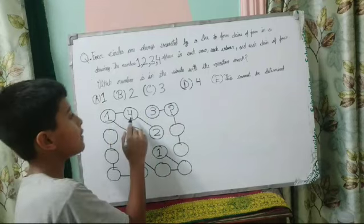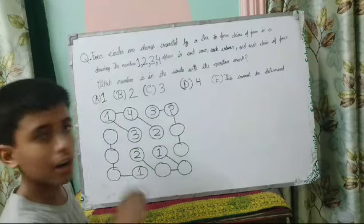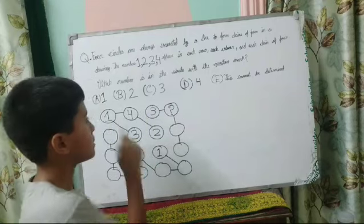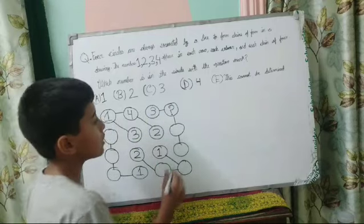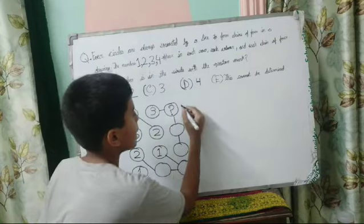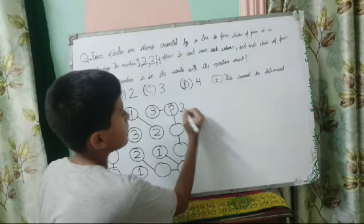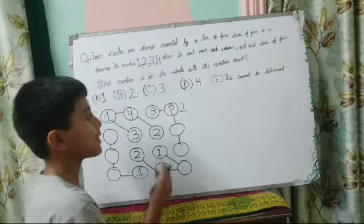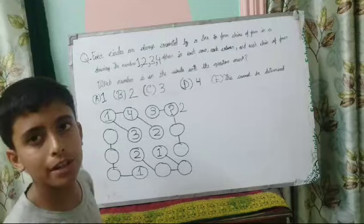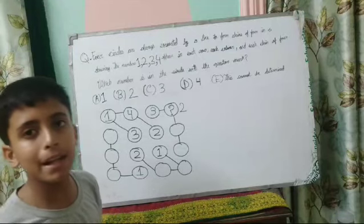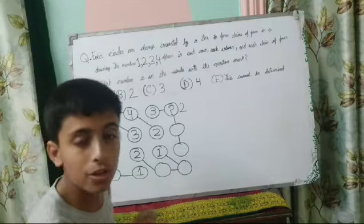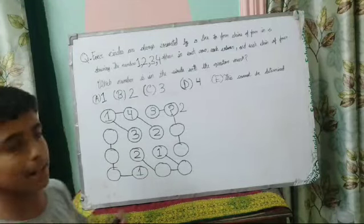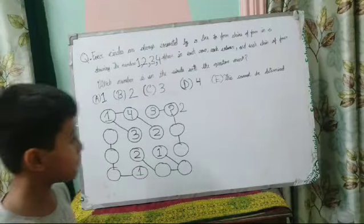Now see — 1, 4, and 3 have come in this row. So in the question mark, there should be number 2. In a competitive exam, you have to do only this much. But I am solving the whole question for your better understanding.